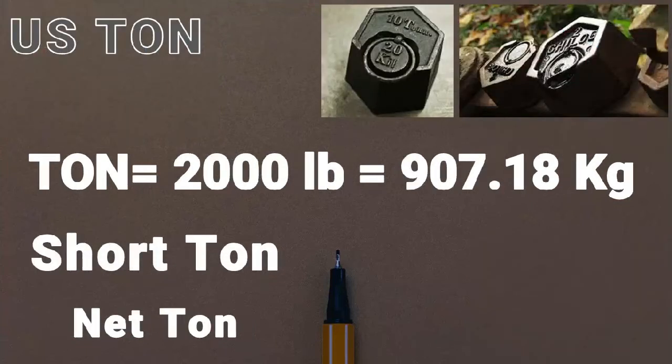In the United States, 1 tonne is exactly 2000 pounds or 907.18 kg, and it is called the short tonne. It is majorly used in the United States and Canada.